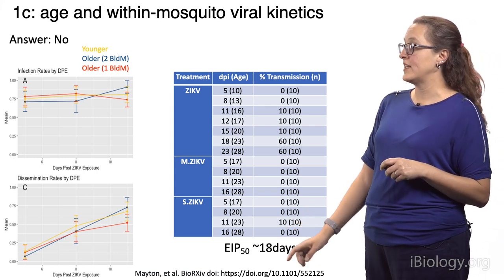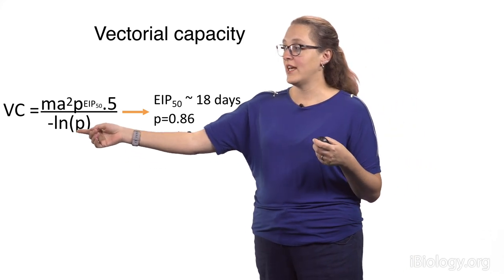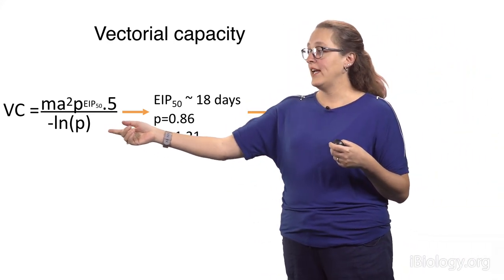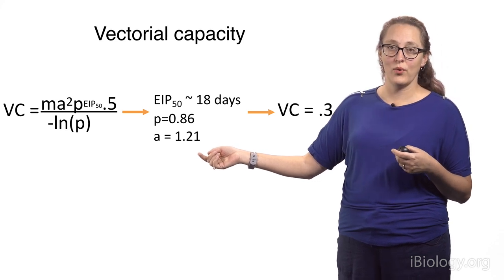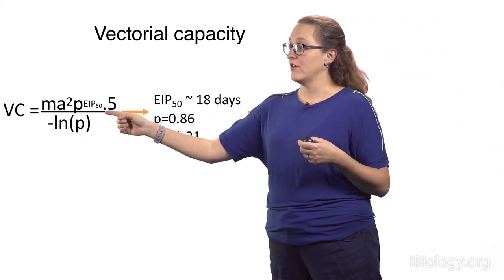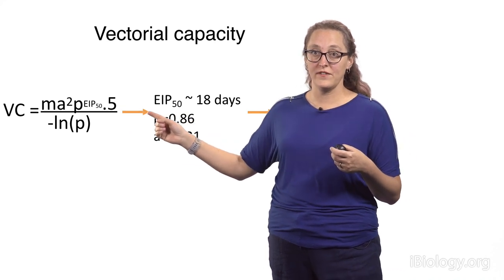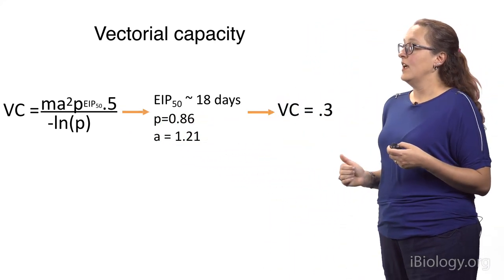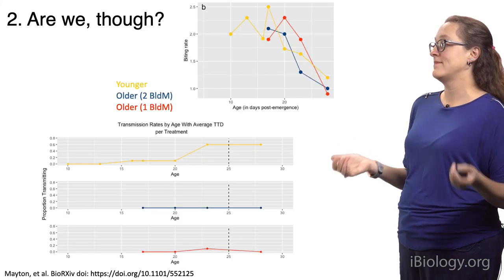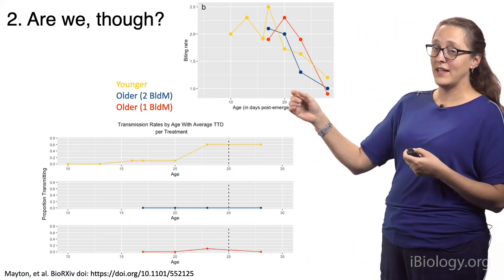We then took all this information and put it into our vectorial capacity equation in the usual way. We set density equal to 1 (a field-measured parameter), measured a biting rate of approximately 1.21 per day on average, used our average probability of daily survival of 0.86, and our EIP50 of 18 days for N, holding vector competence B at 50% to accommodate EIP50. When we put it all together, we get a vectorial capacity of 0.3 — less than 1. But are we really safe? If we look at it in an average way, yes — but maybe that doesn't give us the whole picture.